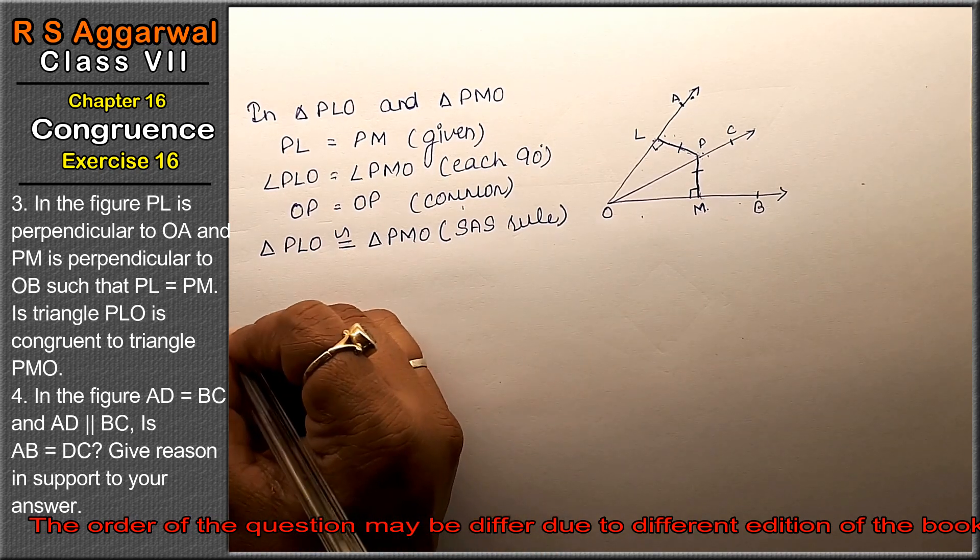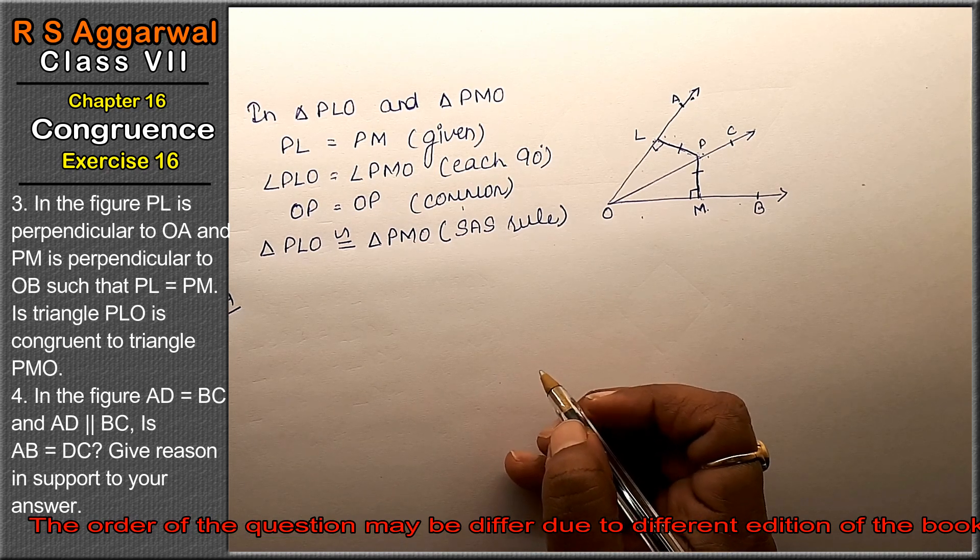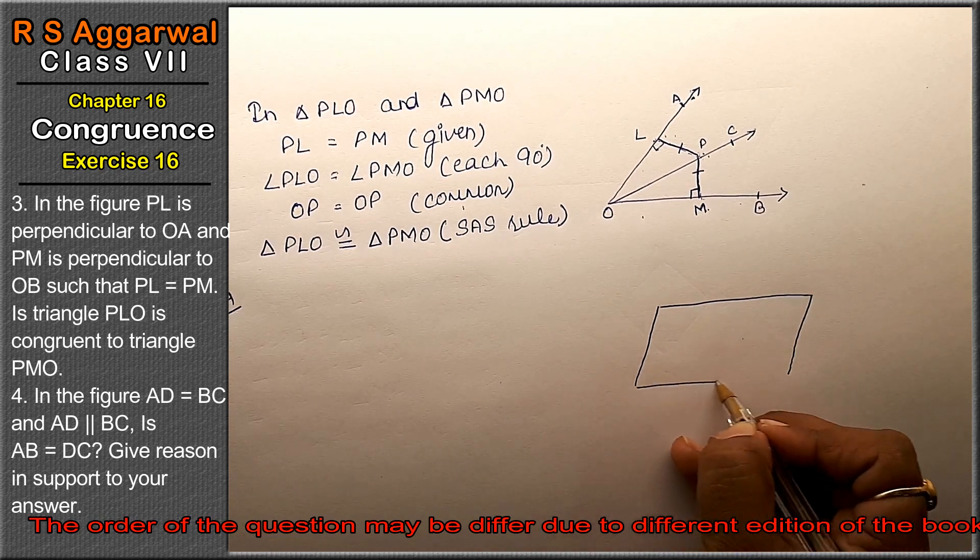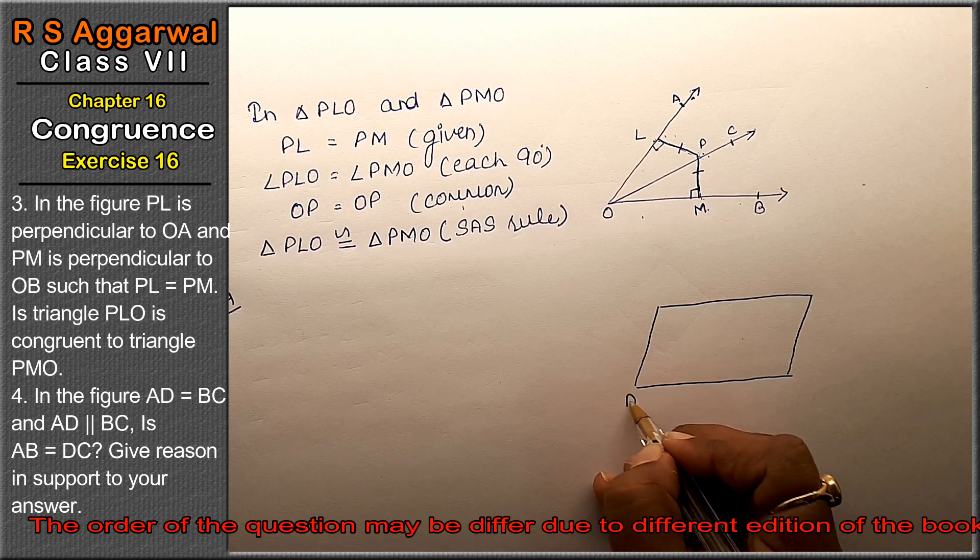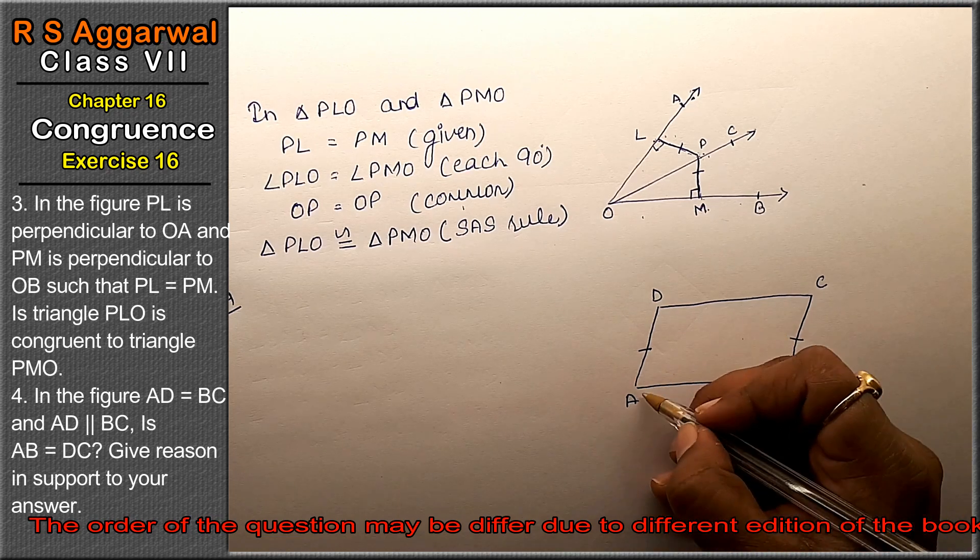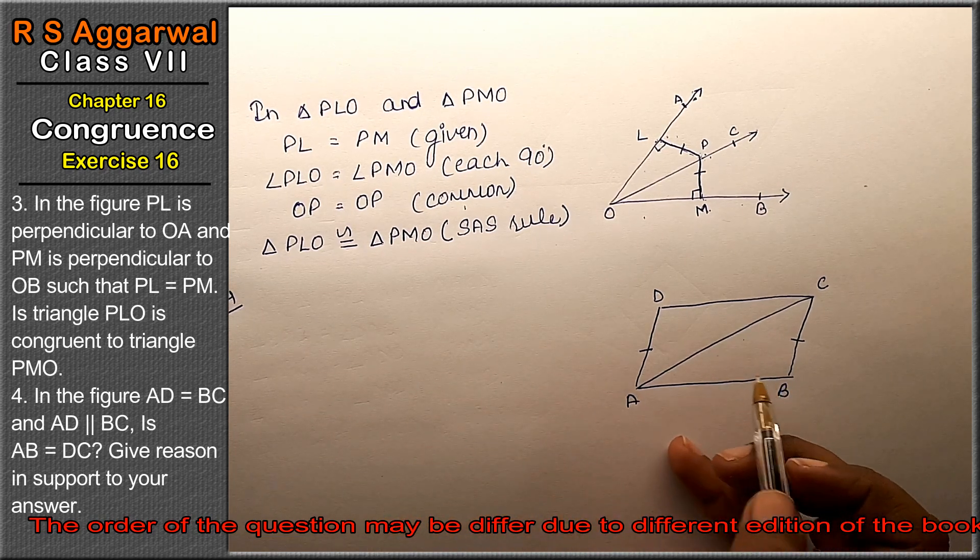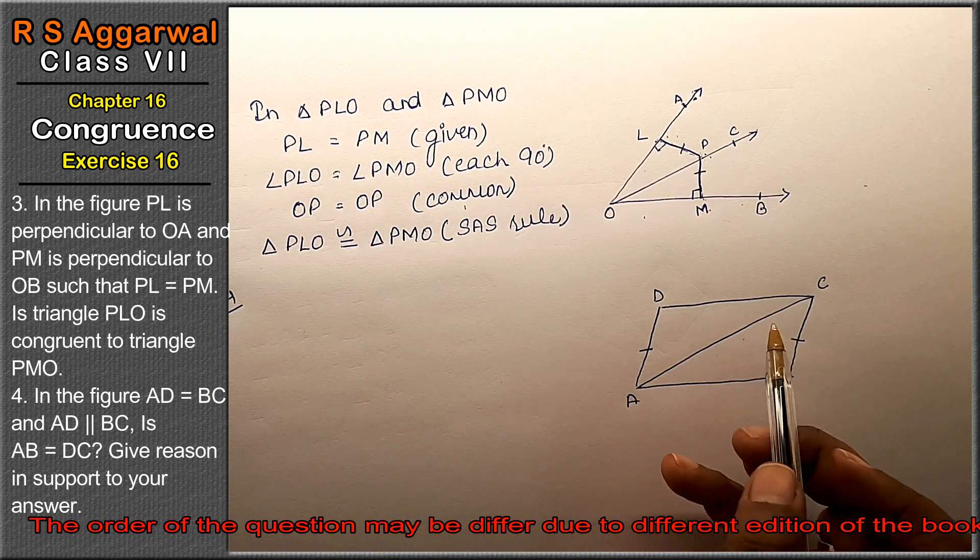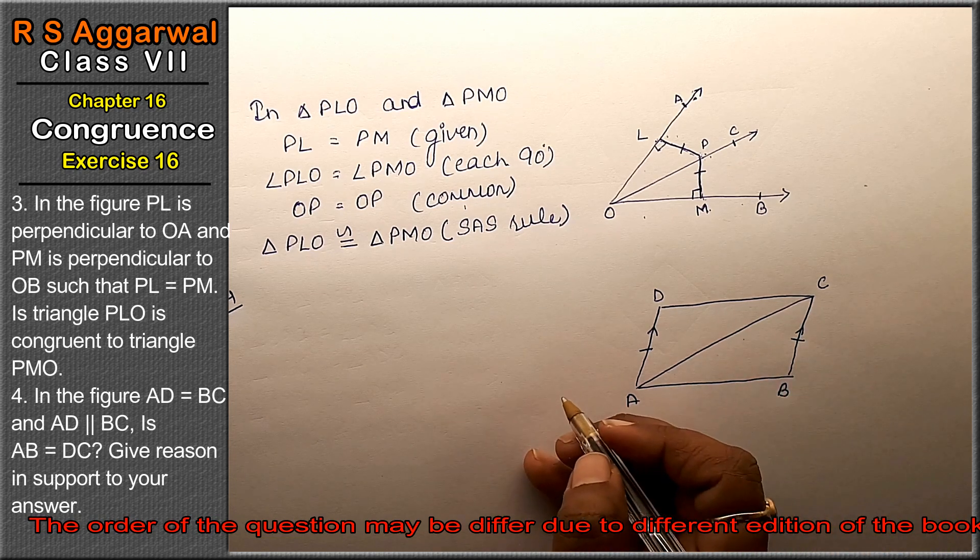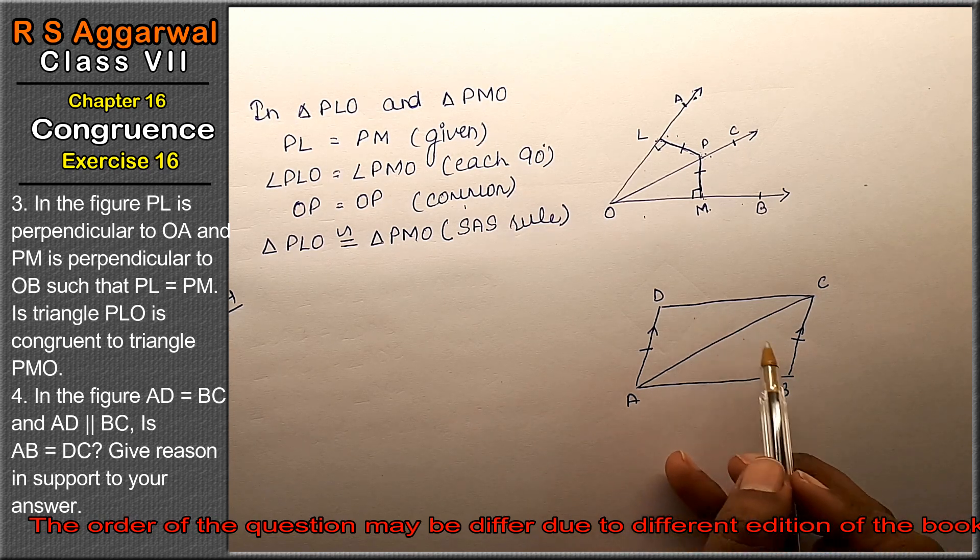Let's do question number 4 of Exercise 16, that is congruence. Question number 4: In figure 2, we have ABCD. In this figure, AD equals BC and AD is parallel to BC. Prove that AB equals DC and give support to your answer.